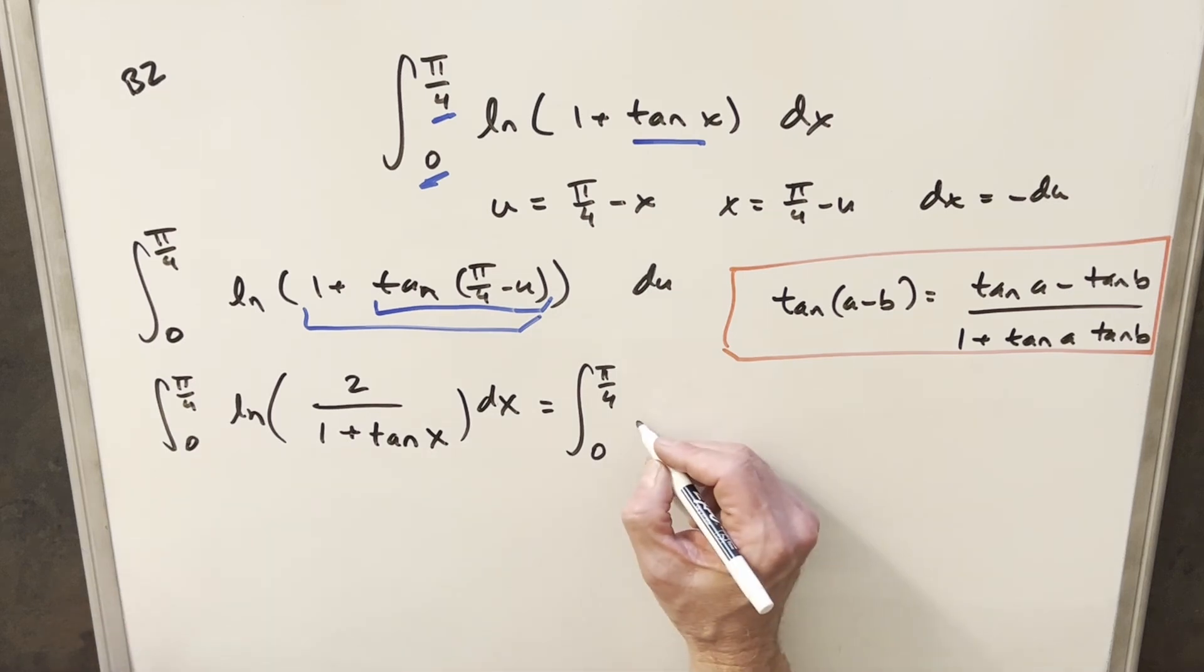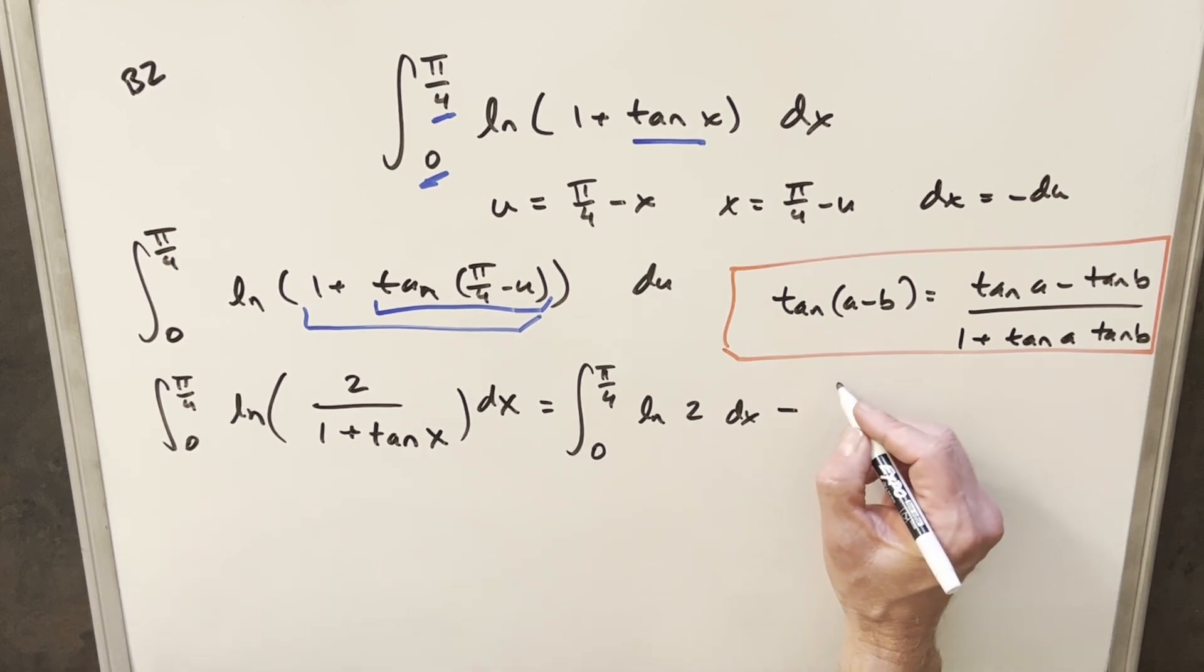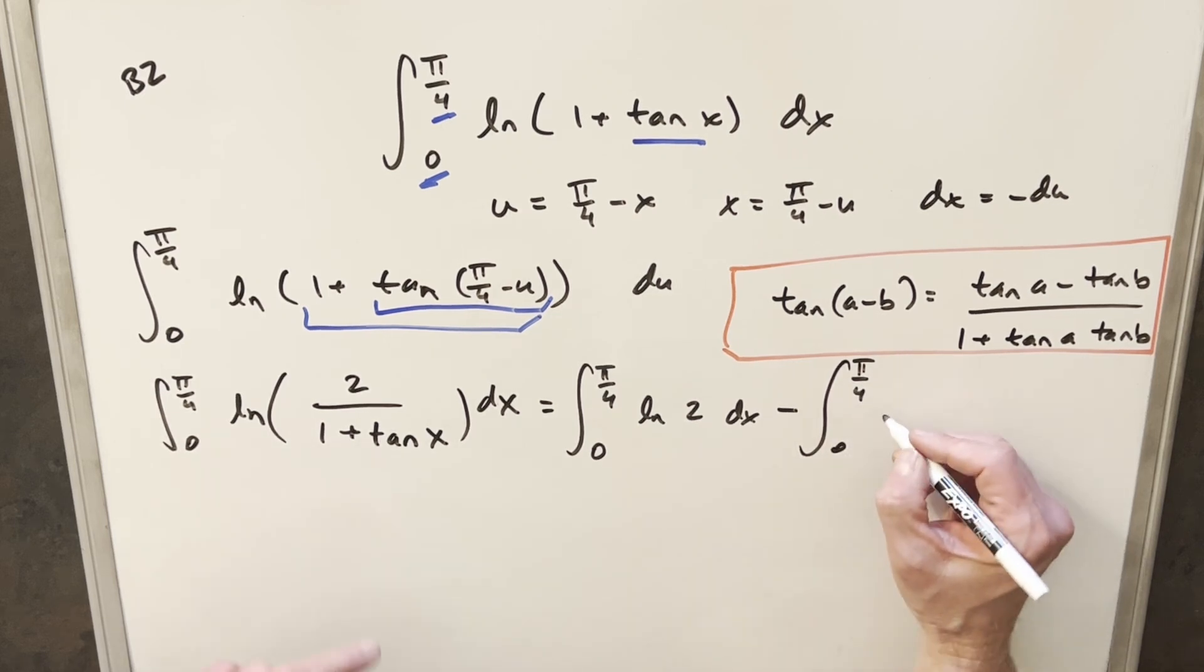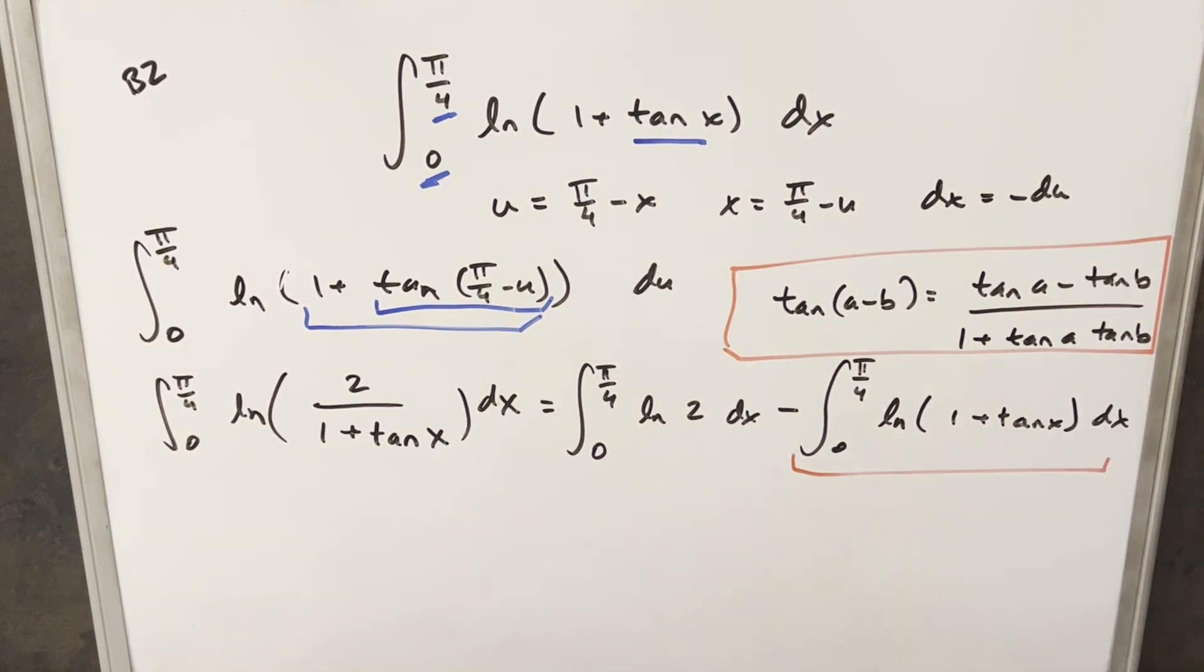So we'll kind of do it all in one step. For our first one, we're going to split this natural log, well, just natural log of 2 dx. And then for the second one, the division turns it into a minus sign. So we have the same bounds, but this is going to become natural log of 1 plus tan X. But the good news here with what we came up with, this is actually just our original integral.